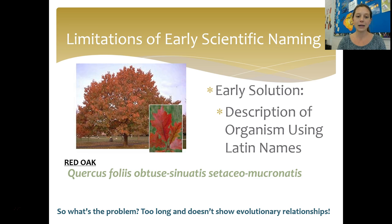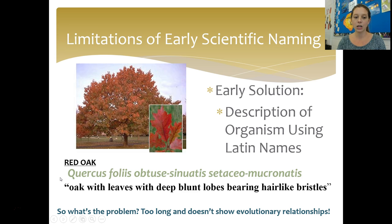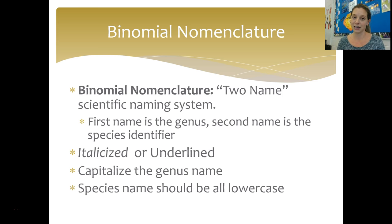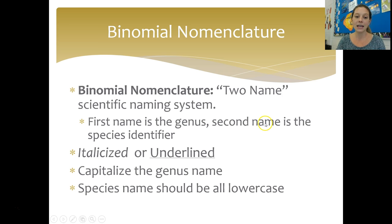For example, he called a red oak a Latin phrase meaning 'oak with leaves with deep blunt lobes bearing hair-like bristles.' That's a very good description of a red oak, but the problem is it's way too long and it doesn't show evolutionary relationships. So Carolus Linnaeus developed our modern form of binomial nomenclature — a two-name scientific naming system. 'Bi' meaning two, 'nomial' meaning name, 'nomenclature' meaning naming. The first name is the genus of the organism, and the second name is the species identifier.